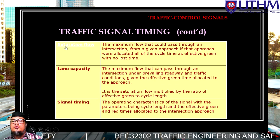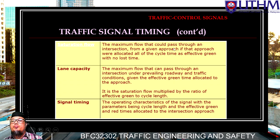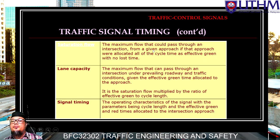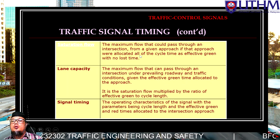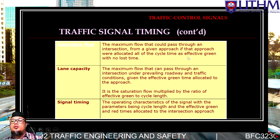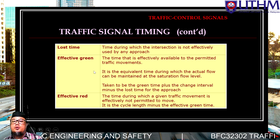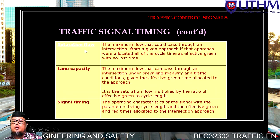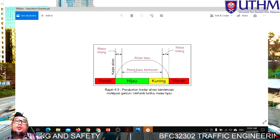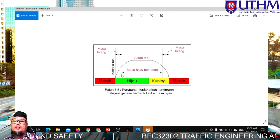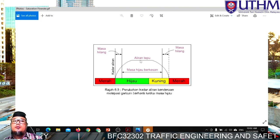Next, 'saturation flow.' The maximum flow that could pass through an intersection for a given approach, assuming that approach is allocated all the cycle time as effective green time with no lost time. Note that saturation flow does not refer to congestion — it refers to the maximum capacity of flow.